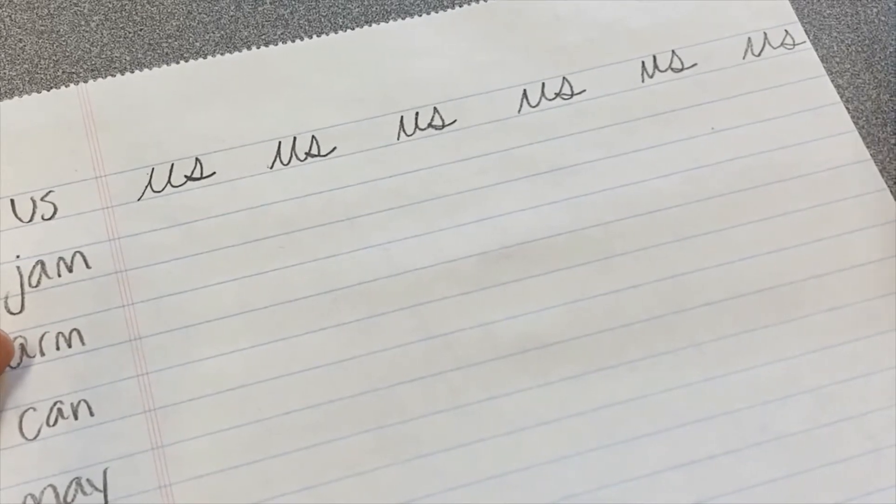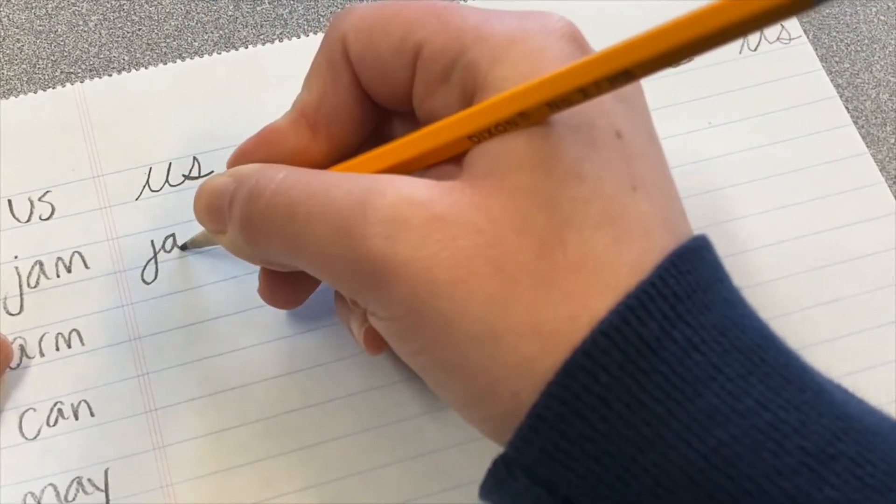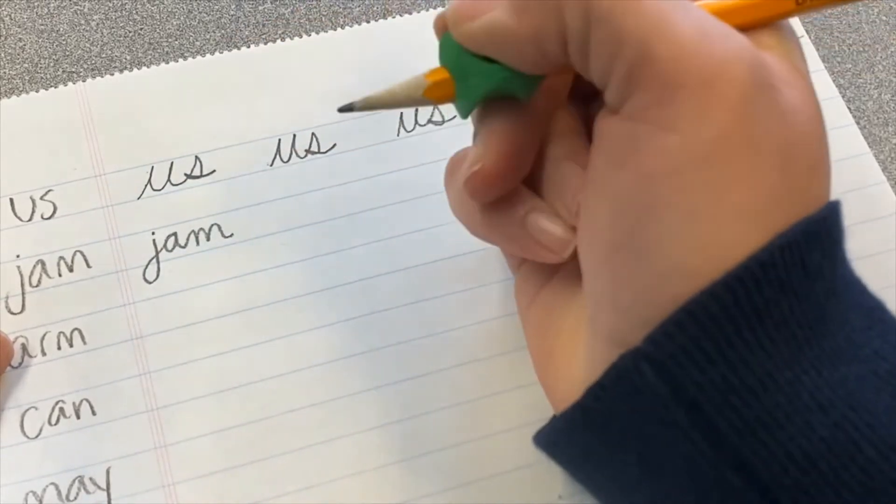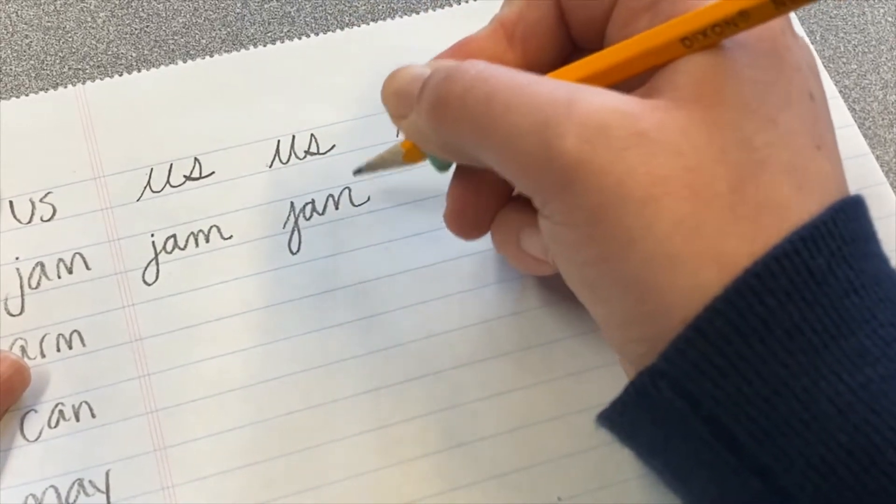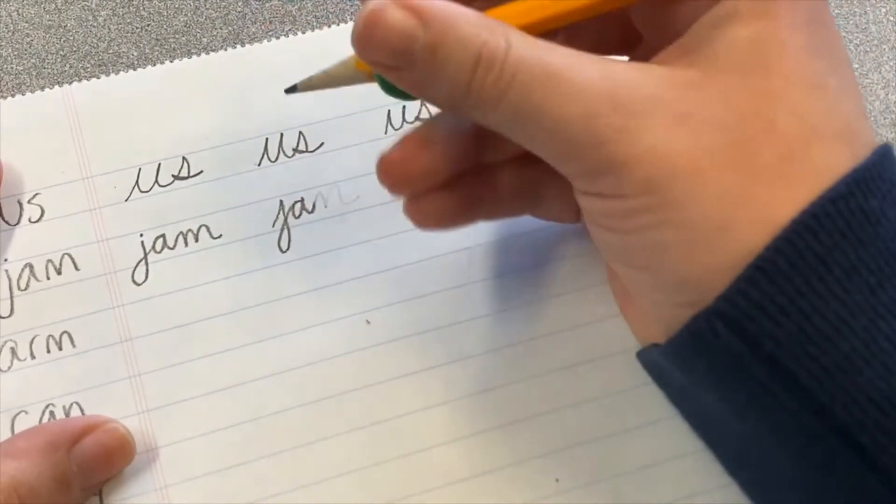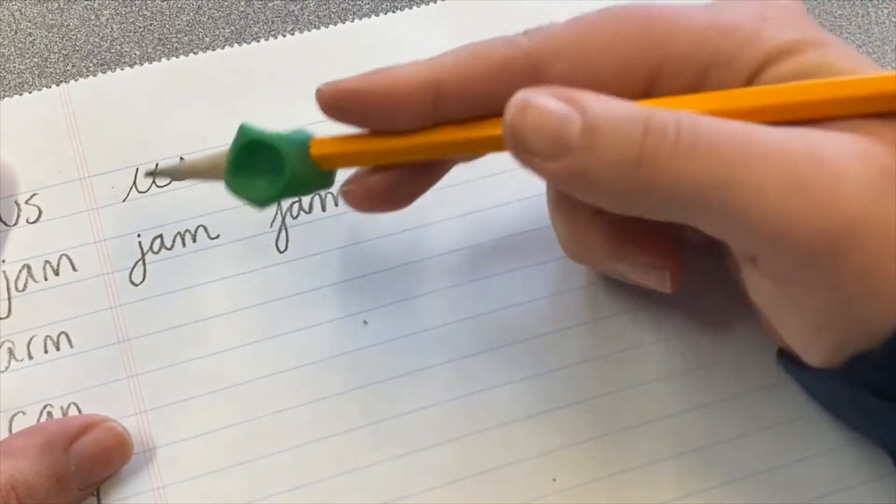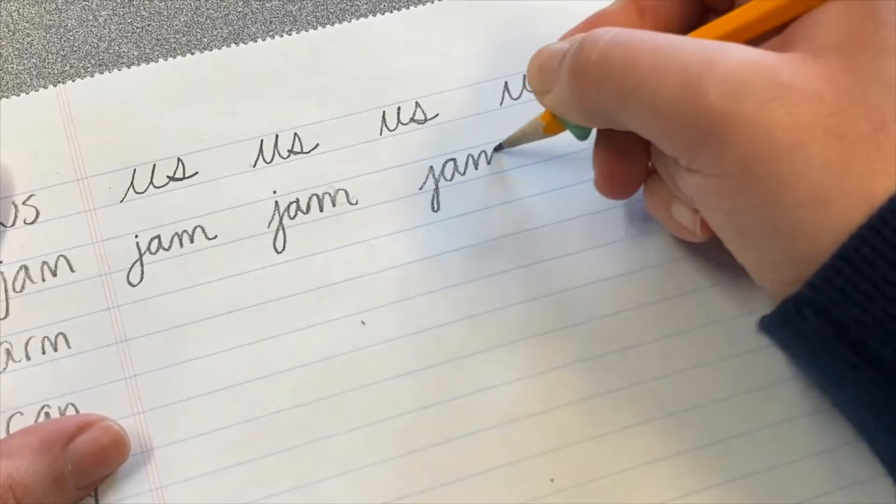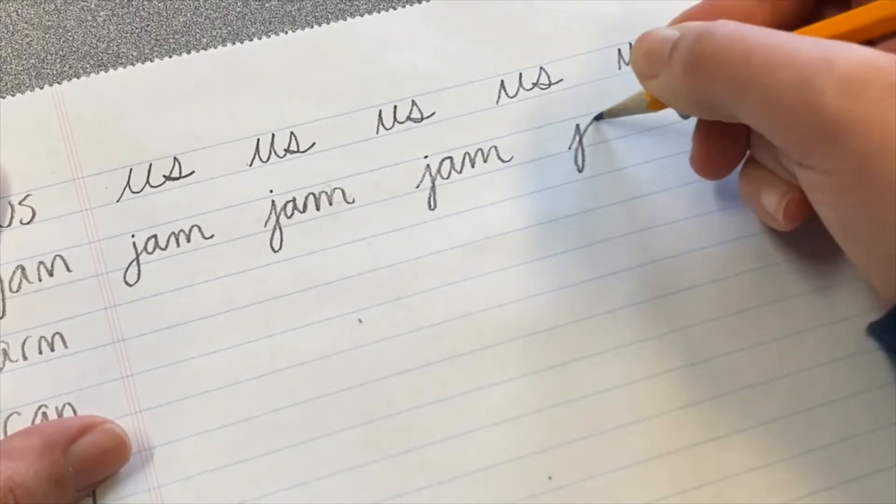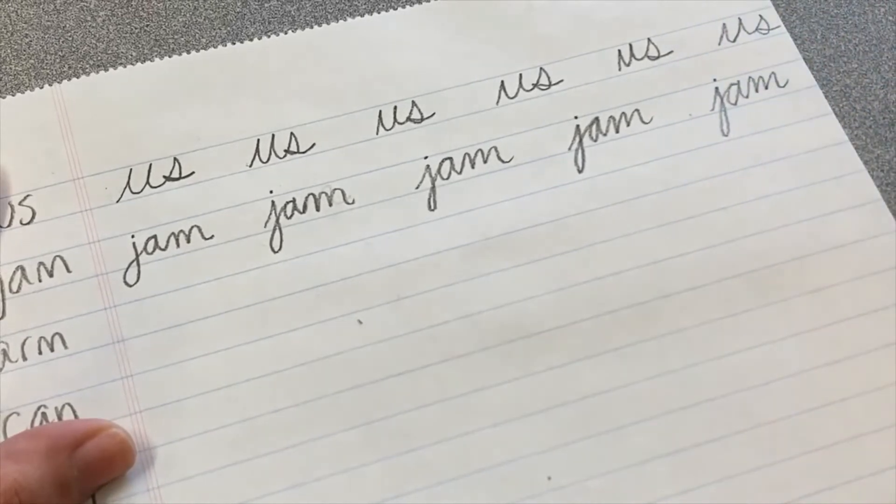Next up, we're writing the word jam. We'll make our cursive J, loop, and right into the A, and right into the M. And then we'll dot our I at the end. You can choose to do a little connection tail at the beginning if you would like to. Sometimes it's hard to do two things at the same time. So you can have a connection tail at the front, or you don't have to because it's its own separate word.